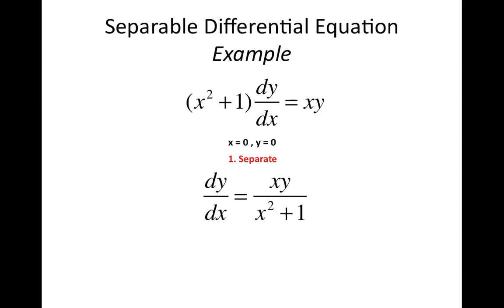Step one is separate. What you want to do is get all of the y's on one side and all of the x's on the other side. In general you want to get all of one of the variables on one side and all of the other variables on the other side. First, I've divided the x squared plus 1 over to the right hand side. I'm not done yet, because you can see x and y's on the left and the right.